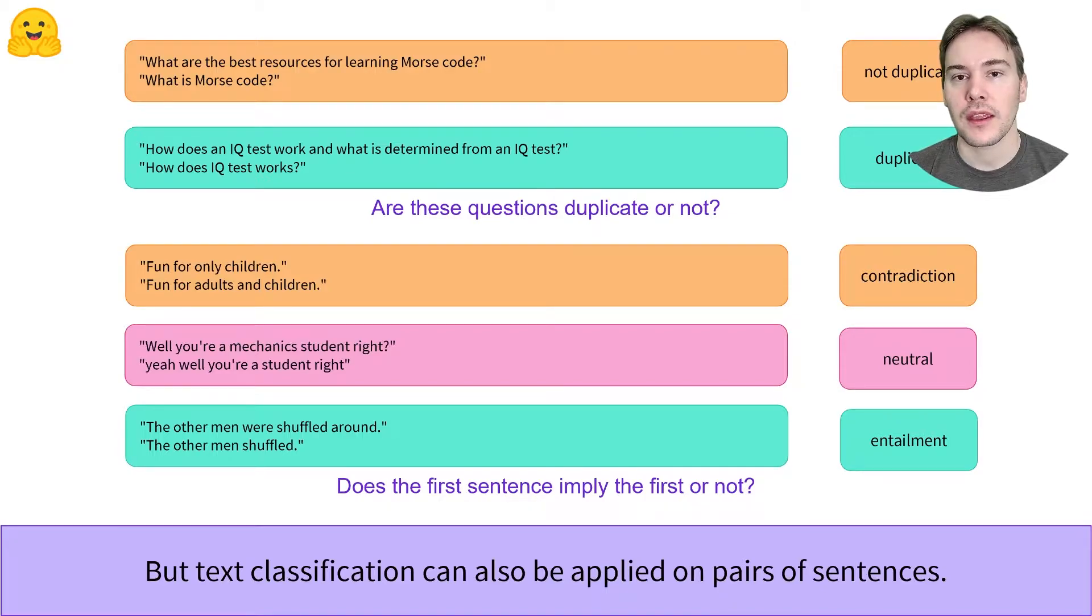In this example, taken from the multi-NLI dataset, we have a pair of sentences for each possible label: contradiction, neutral, or entailment, which is a fancy way of saying the first sentence implies the second.